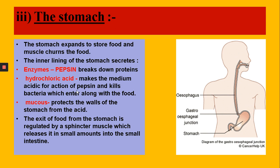For the functioning of pepsin, the medium must be acidic. Therefore the stomach secretes hydrochloric acid, which makes the medium acidic for the action of pepsin. Hydrochloric acid has one more function: if any bacteria enter our alimentary canal along with food, it kills those bacteria and makes the food safe. So hydrochloric acid has two functions: creating an acidic medium for pepsin and killing bacteria.